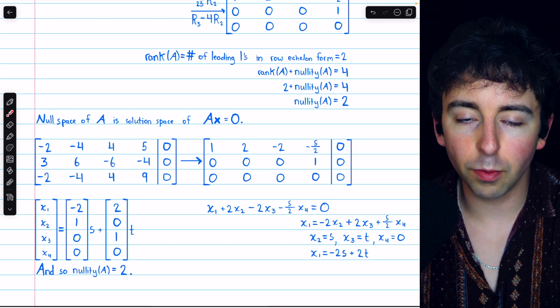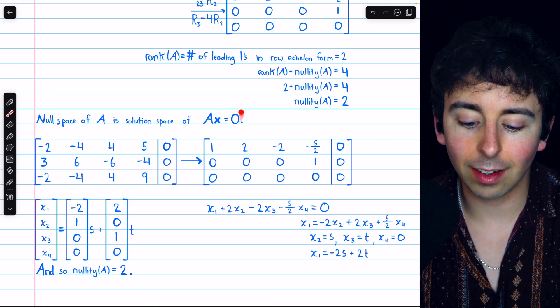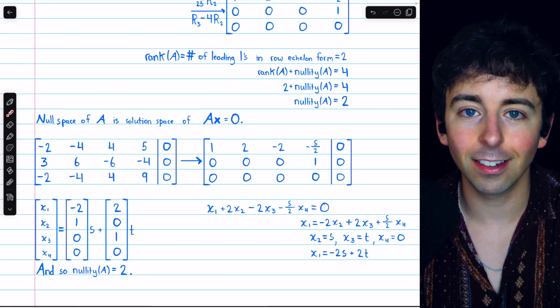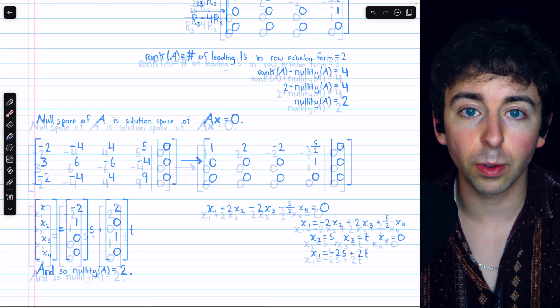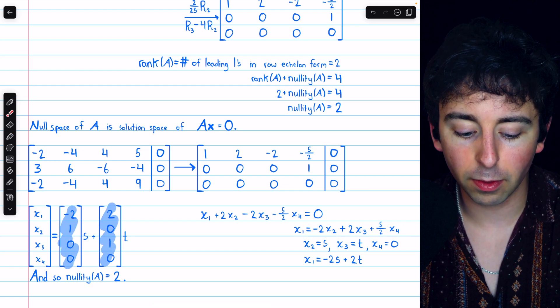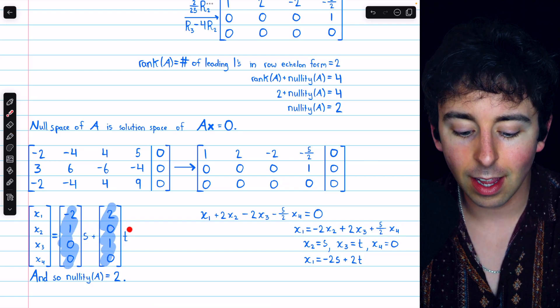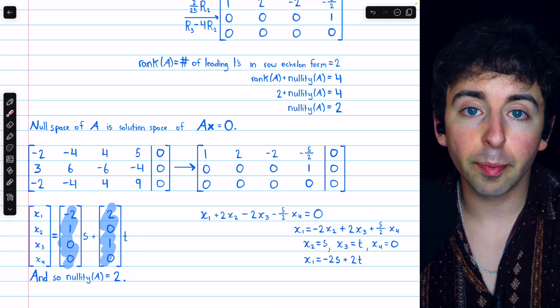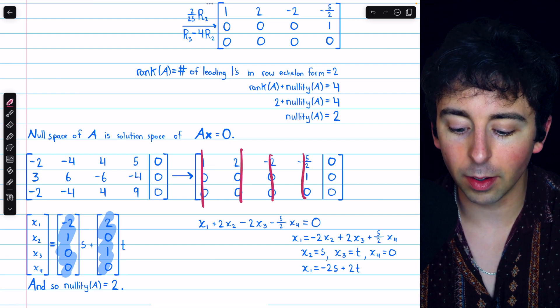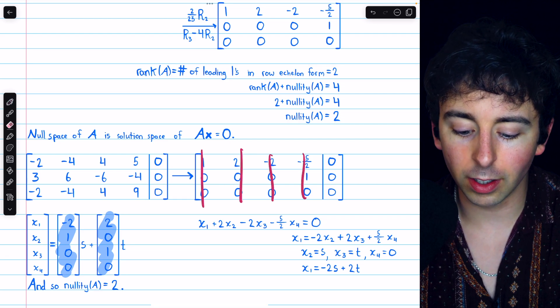So, there are two basis vectors for the solution space of Ax equals 0. So, the dimension of the null space, hence the nullity, is 2. Notice each of these basis vectors for the solution space comes from a parameter, one for s and one for t.